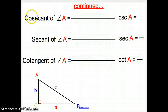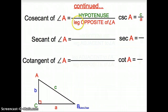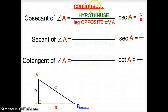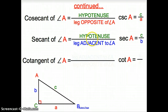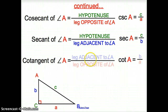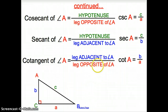Now let's try some more. Cosecant of angle A is the hypotenuse over the leg opposite of angle A — that's C over A. Notice how cosecant is the flipped version of sine. Secant is hypotenuse over the adjacent, which is the opposite of cosine. And then cotangent is leg adjacent over leg opposite, which is the opposite of tangent.